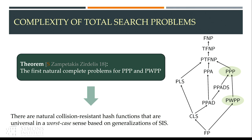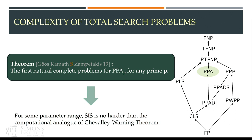I'm going to talk about two works. The first is for identifying complete problems for PPP and weak PPP. The connection to lattice-based cryptography is that our complete problem looks like a generalization of SIS, and because of its hardness for this class, we can get something about collision-resistant hash functions. The second result has to do with PPA, and again has a connection with SIS — for some range of parameters, we can reduce SIS to a problem called Chevalley.